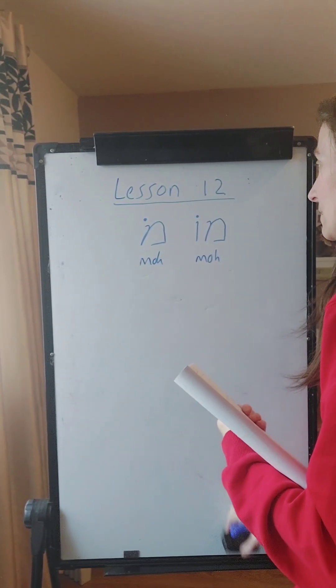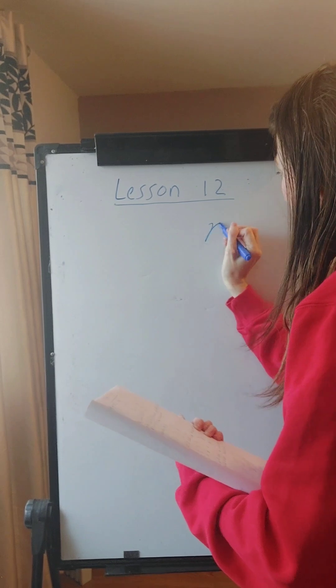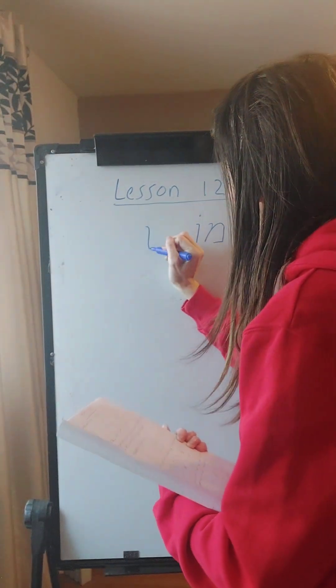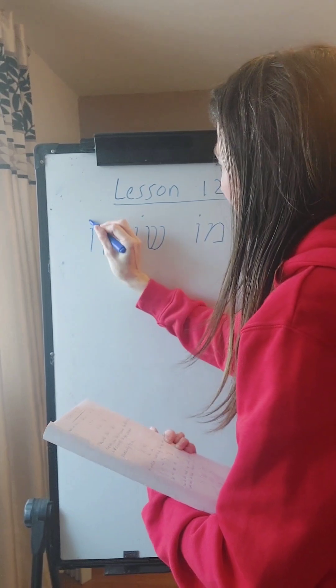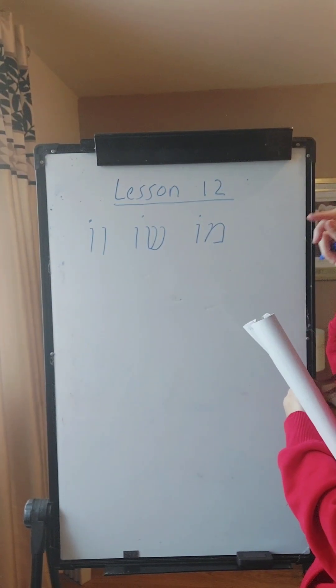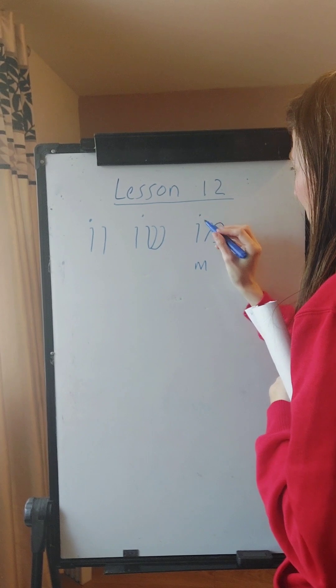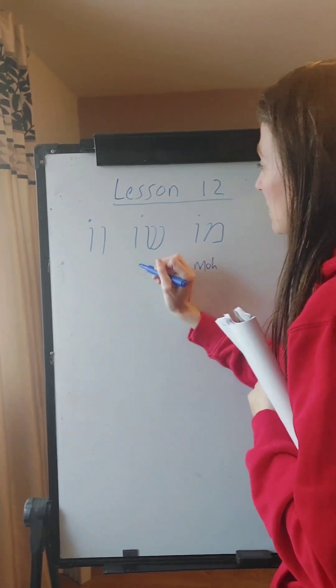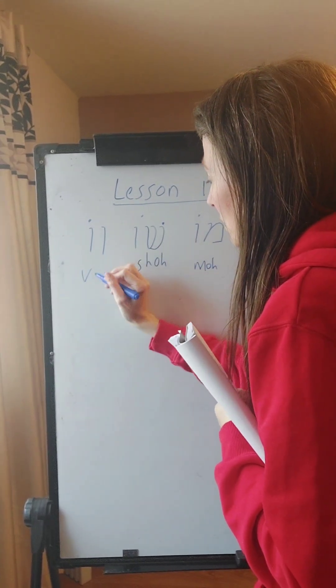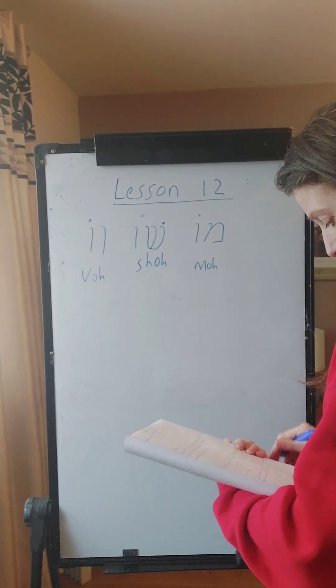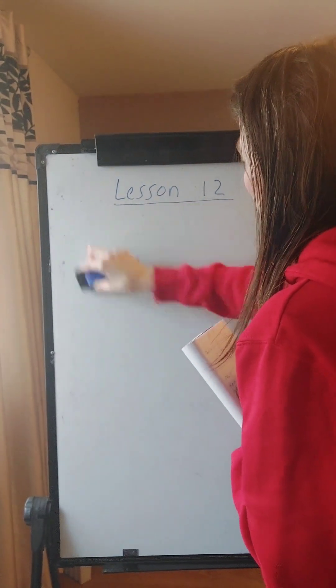Are we going to read some words now? So this is the other O vowel we learnt in the last lesson. So like I just showed you, it's the Mem, so M, and then the sound of the vowel which is mo. So mo. And it's the Vav with the O vowel, vo.